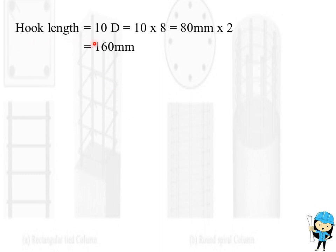Hook length. Hook length is equal to 10D. D is the diameter of the stirrup provided, which is equal to 10 x 8 equal to 80 mm into 2. 2 is multiplied to 80 mm since the stirrup is provided on both sides of the column. Therefore, it is 160 mm.